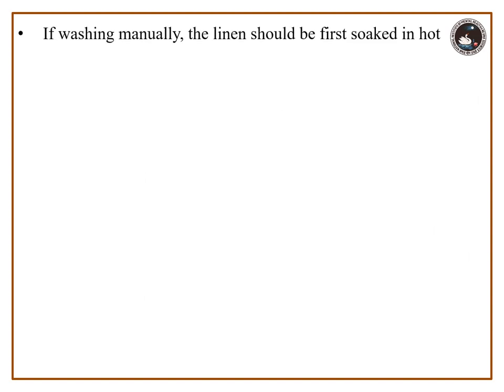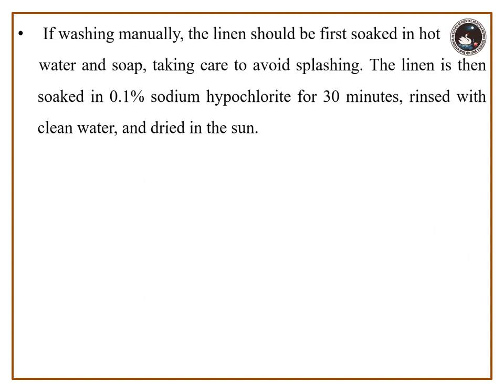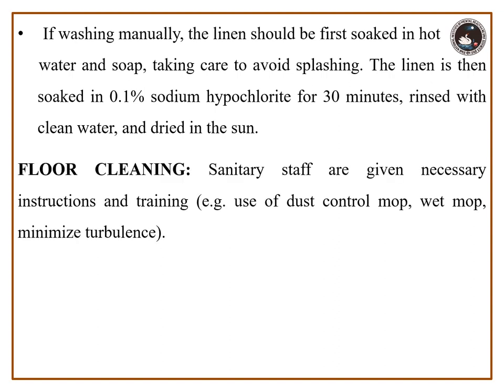If washing manually, the linen should first be soaked in hot water and soap, taking care to avoid splashing. The linen is then soaked in 0.1% sodium hypochlorite for 30 minutes, rinsed with clean water, and dried in the sun.